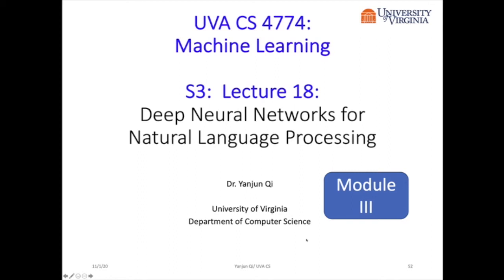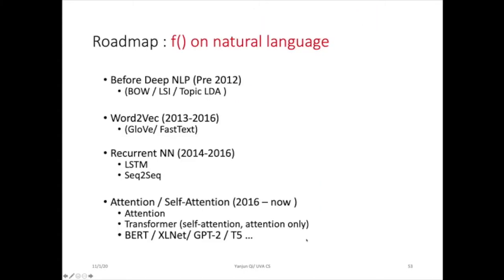Now we are in Module 3, Lecture 18 on Deep Neural Networks for Natural Language Processing. In Module 1 we covered NLP applications and tasks. In Module 2 we covered word embedding models and recurrent neural networks like LSTM, and the sequence-to-sequence modeling extension. Now in Module 3 we will talk about attention and self-attention, the transformer model, and various transformer extensions using different kinds of self-supervised or unsupervised pre-training.